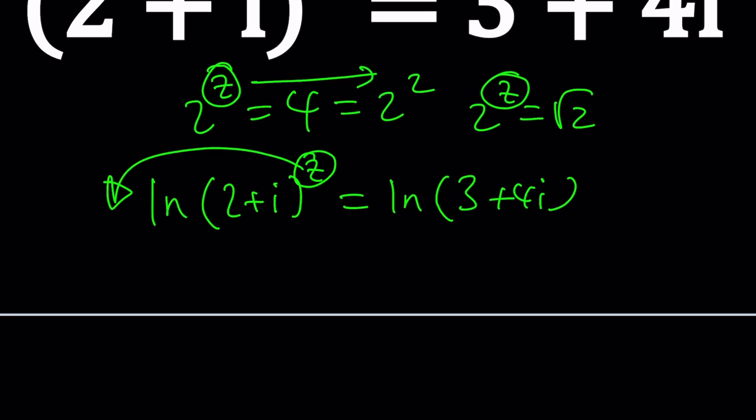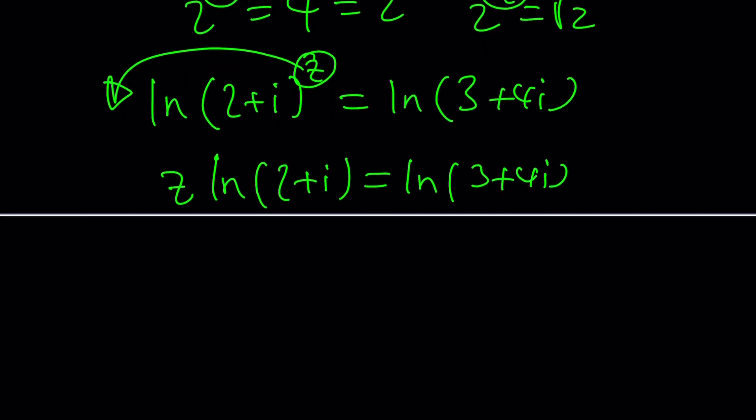Let's just ln both sides. Bring the z to the front. z ln 2 plus i equals ln 3 plus 4i. And then from here, z becomes ln 3 plus 4i divided by ln 2 plus i. This might give us a solution. But how? You need to be able to log a complex number. So how do you do the complex logarithm?